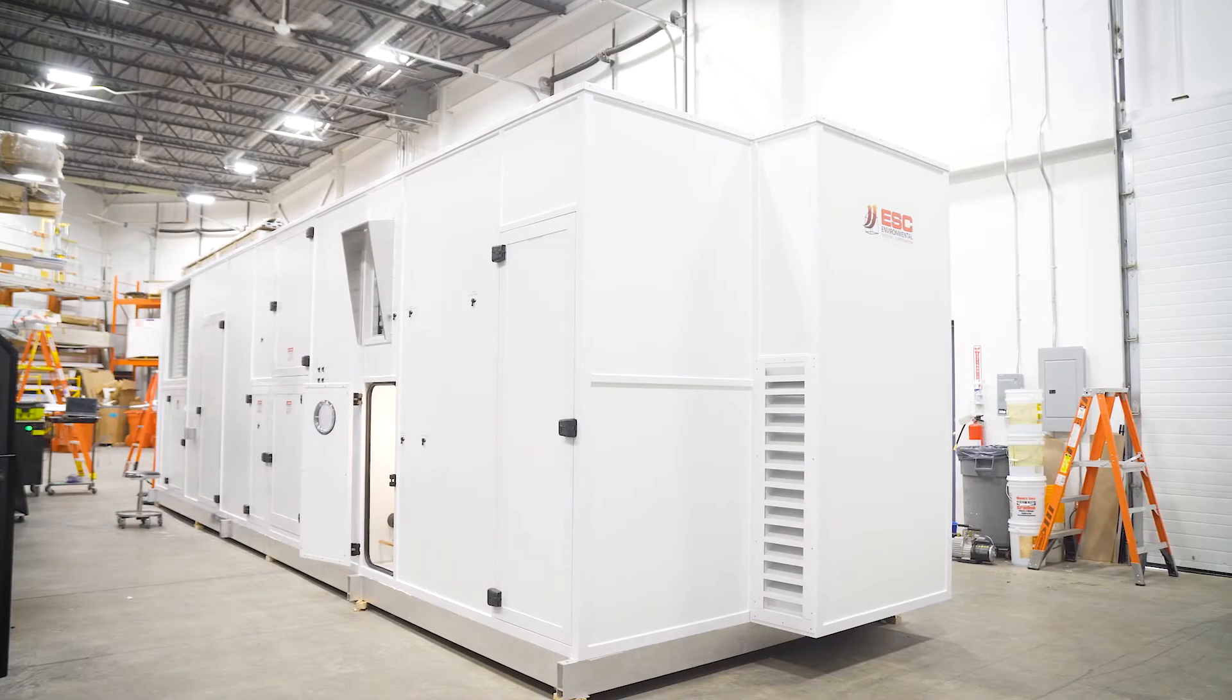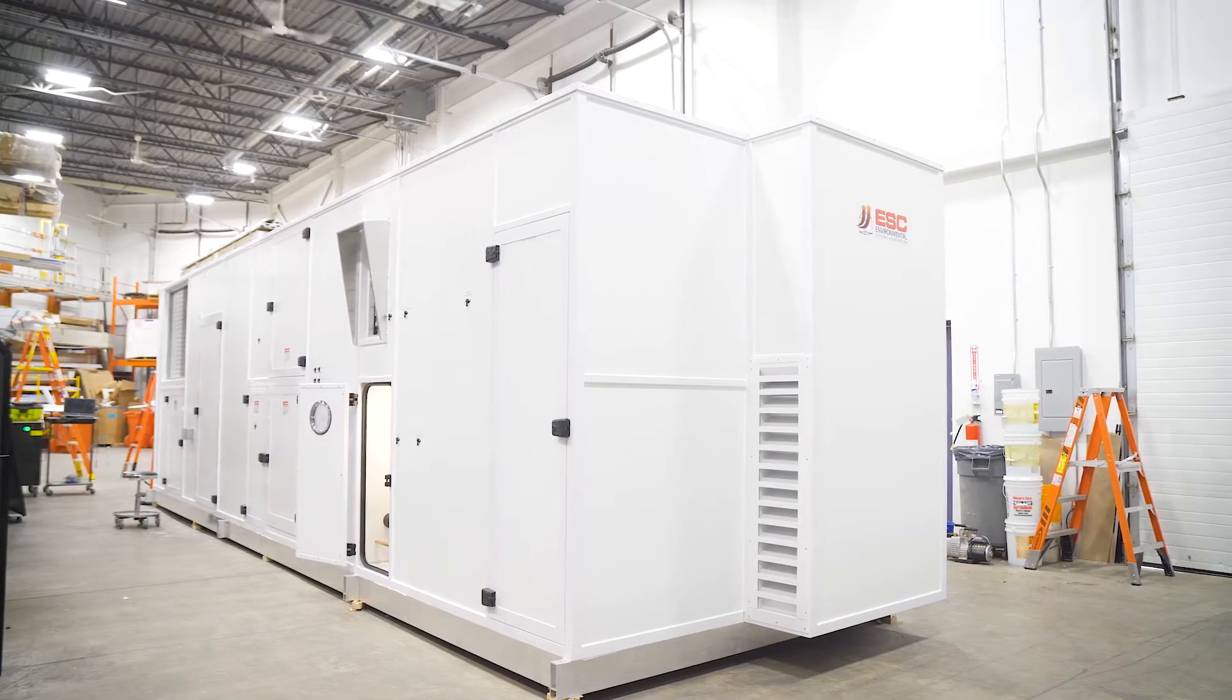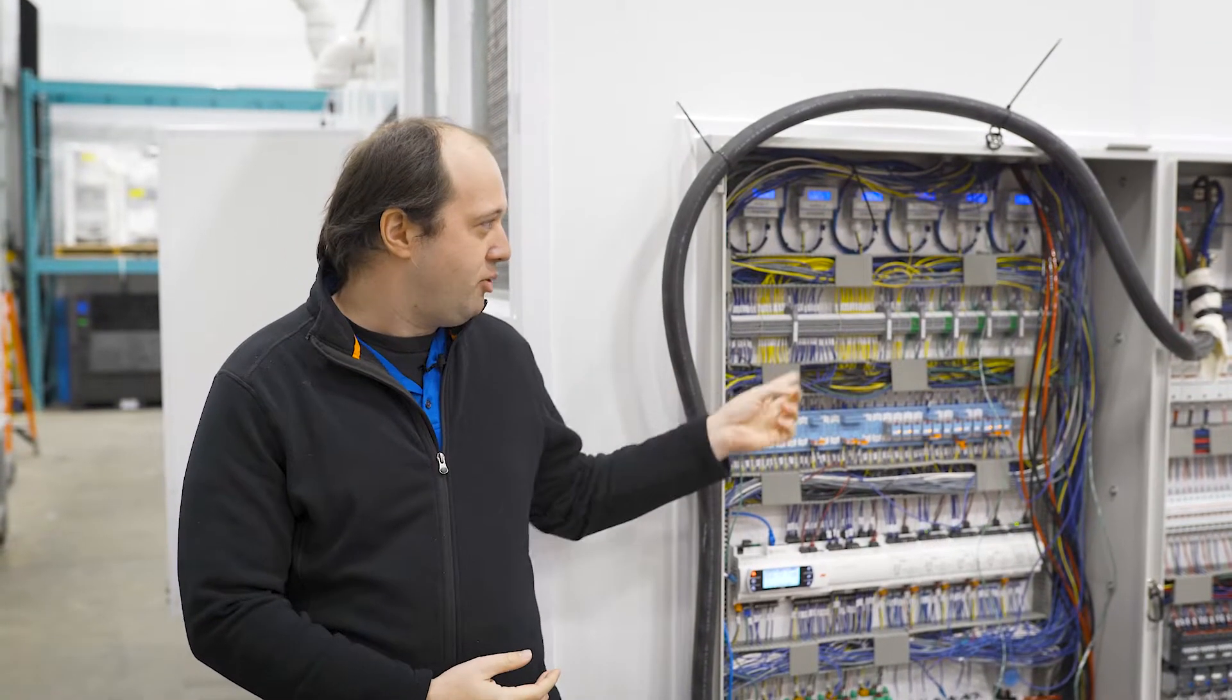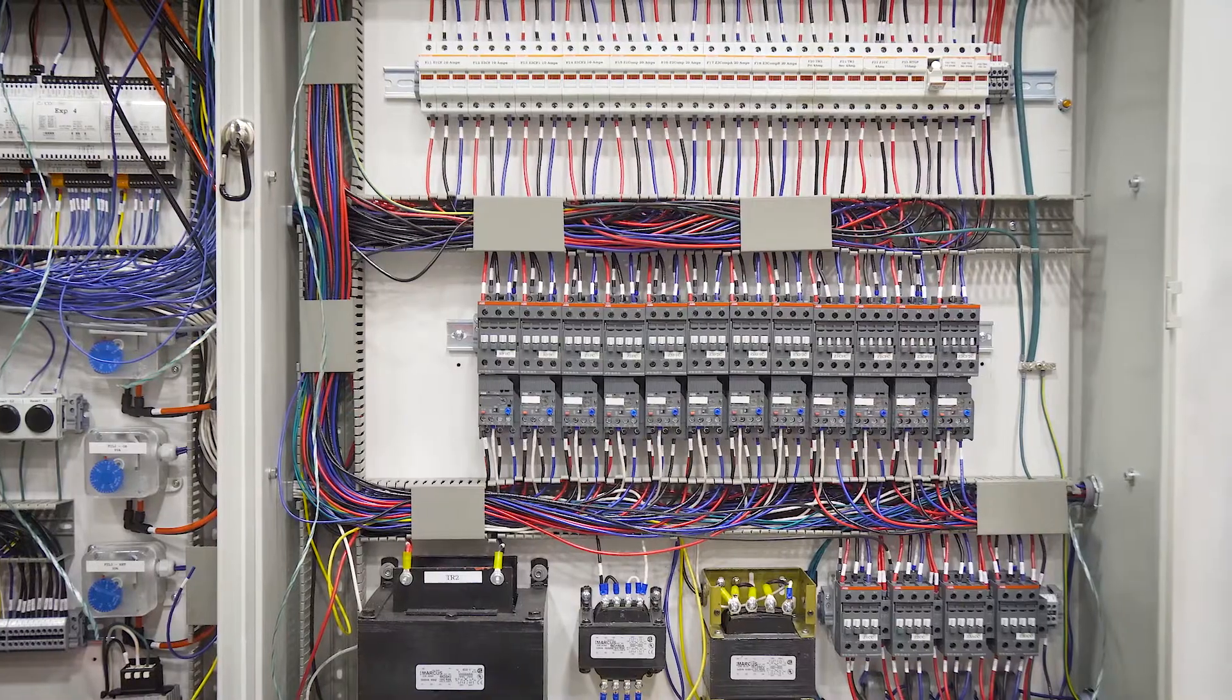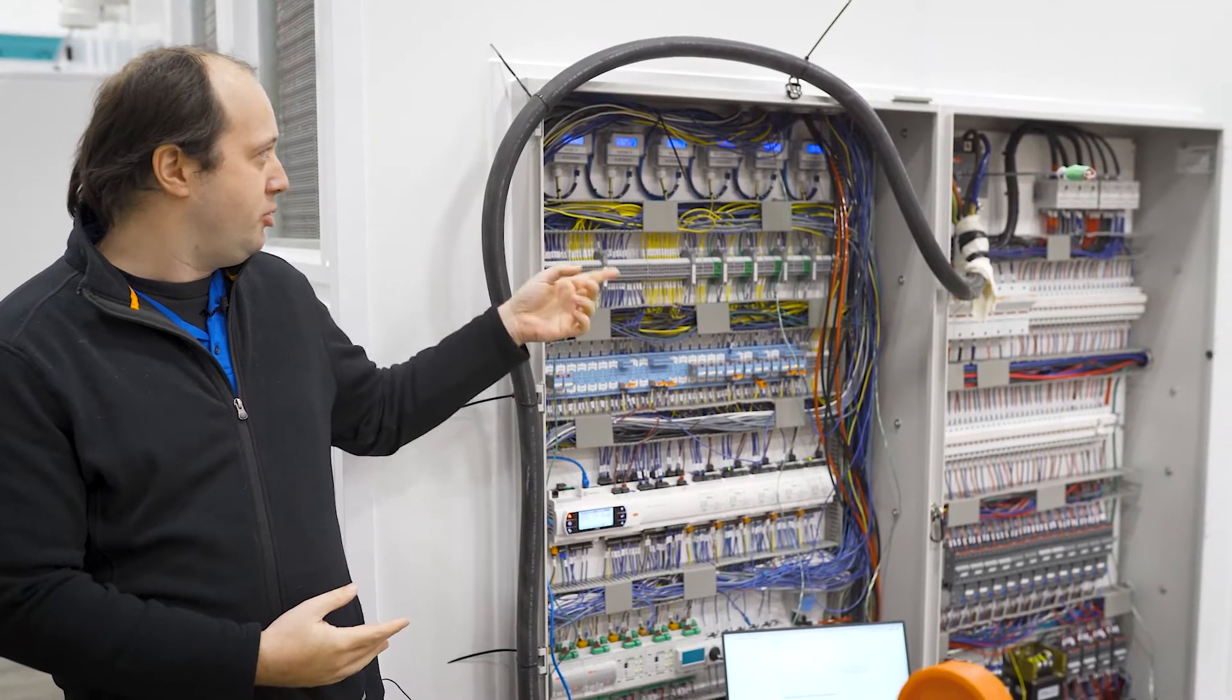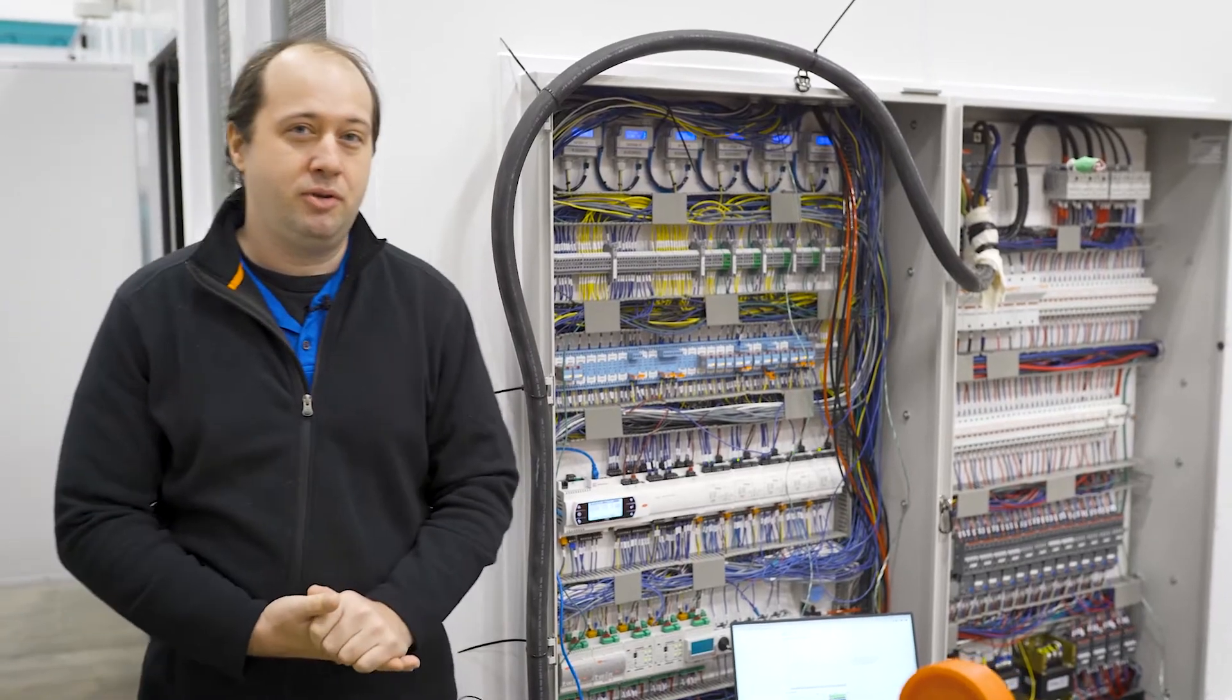This is a custom air handler to serve one of our clean rooms. On this end you can see our low and high voltage electrical panels. This is for interconnecting wiring and some tubing that's spread throughout the unit.